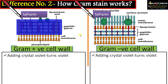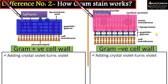When safranin is added, gram positive bacteria is already stained, so safranin will not attach to the wall of gram positive bacteria. Whereas gram negative bacteria is de-stained by alcohol treatment, so safranin can stain it. The reason is that gram positive bacteria has a thick outer peptidoglycan wall — the crystal violet is bound to this peptidoglycan wall and alcohol cannot dissolve it, therefore the stain remains intact even after alcohol treatment.